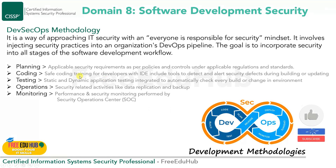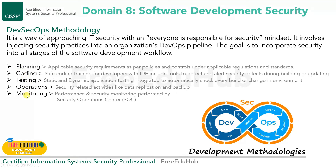We also have 5 steps: Planning, Coding, Testing, Operations, and Monitoring. In the Planning phase, we apply applicable security requirements as per policies. We implement controls under applicable regulations and standards. Those standards are our applicable policies and security requirements, and we incorporate all those things in planning.